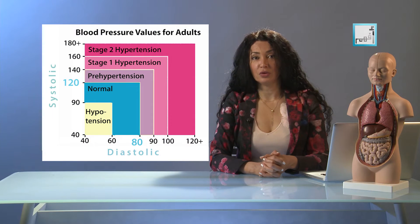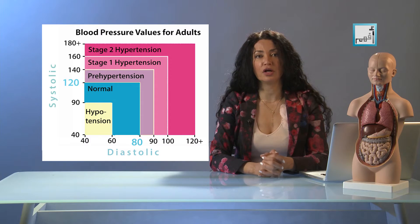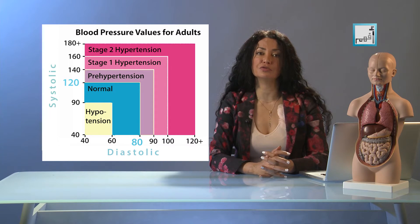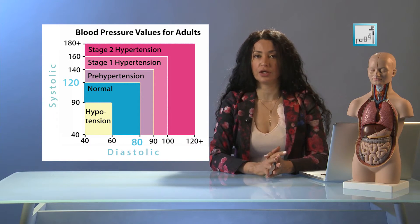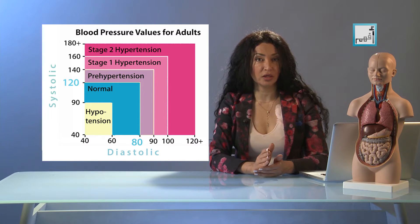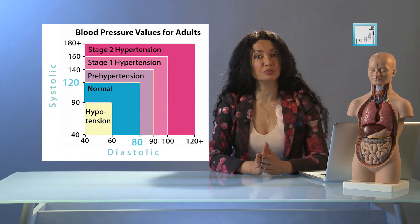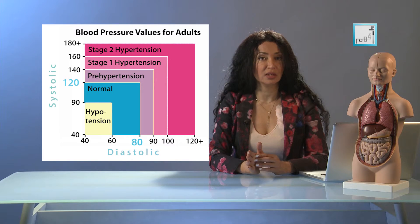The top number, or the systolic blood pressure, is considered a major risk factor for cardiovascular disease for people above 50 years of age. In most people, systolic blood pressure rises steadily with age due to increasing stiffness of large arteries, a long-term build-up of plaque due to unhealthy eating habits and a sedentary lifestyle.